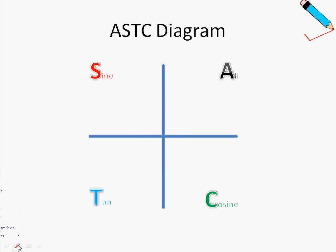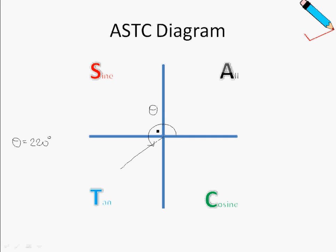Let's move on to the third quadrant, also known as the tangent quadrant. Let's say theta equals 220 degrees — measured in an anti-clockwise direction from this point up to here. The large angle you see is theta. Alpha is always measured with respect to the horizontal axis, so in the third quadrant, theta equals 180 degrees plus alpha.